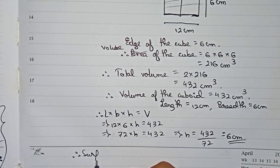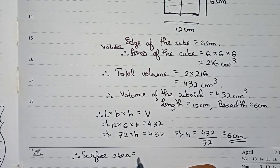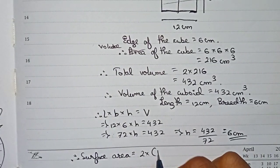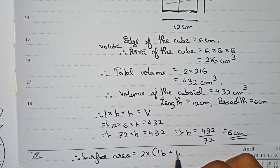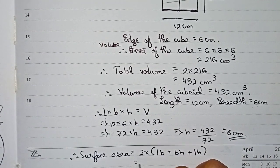Therefore, surface area is equal to 2 into length into breadth plus breadth into height plus length into height.